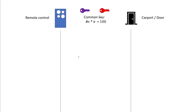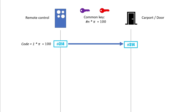Here is a simplified sketch explaining rolling codes. The sender and receiver agree on a common key. In this example, the sequence number starts at 1, 2, 3, and so on — call it N. You multiply N by π and then by 100. This is of course far more complicated in real life, but this explains the principle.